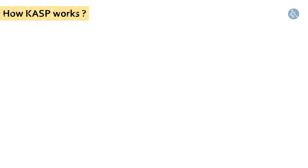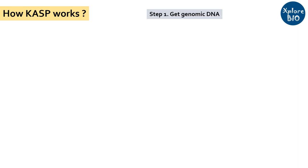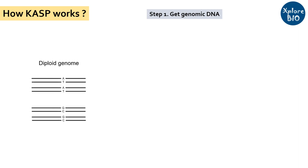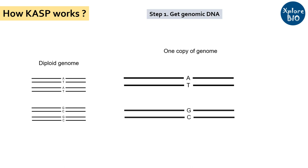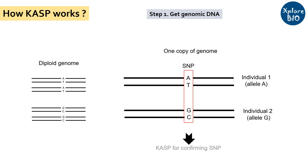The first step is to have genomic DNA of the individuals in which the SNP has to be checked. If the individual is diploid, it will have two copies of the genome — here I am showing just one copy of the DNA for simplicity. In individual 1, at a specific locus, we have allele A, whereas in individual 2, it is allele G. So there is one SNP at a given locus in two individuals, which we will be confirming using the CASP marker technique.